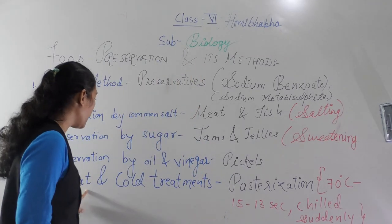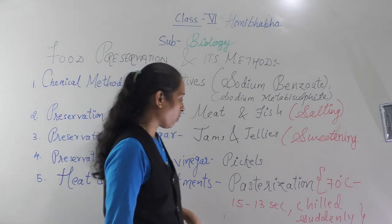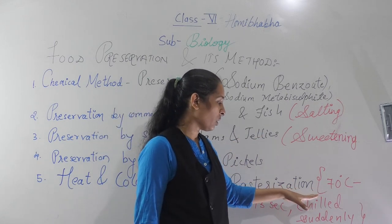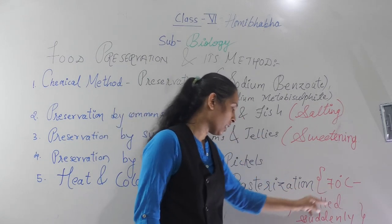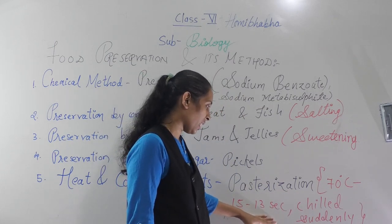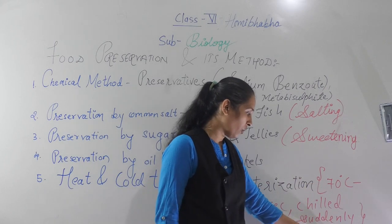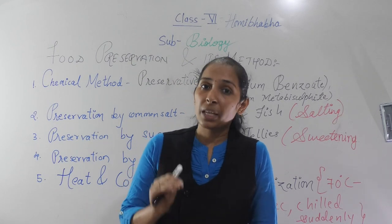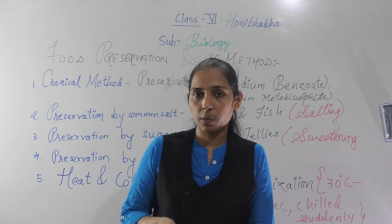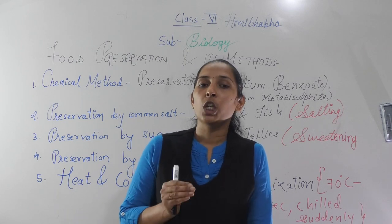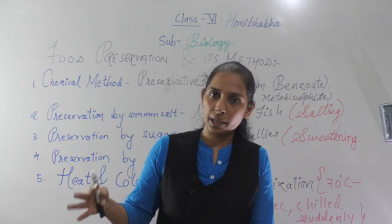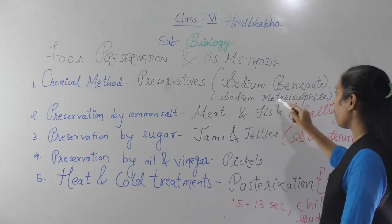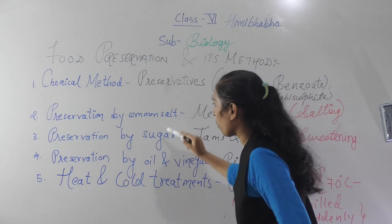So this is all about heat and cold treatment, also called the pasteurization method — in which we give heat to the food substance at 70 degrees Celsius for 15 to 30 seconds and then chill it suddenly. So this is all about what we discussed today: preservatives are special substances added into food stuff which help to keep the food for a long period of time. Chemicals which act as preservatives include sodium benzoate and sodium metabisulphite.